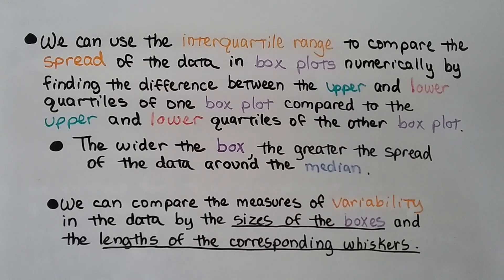So we can use the interquartile range to compare the spread of the data in box plots numerically by finding the difference between the upper and lower quartiles of one box plot compared to the upper and lower quartiles of the other box plot. And the wider the box, the greater the spread of the data around the median. And we can compare the measures of variability in the data by the sizes of the box and the lengths of the corresponding whiskers.